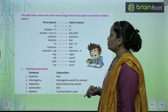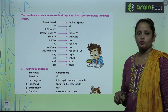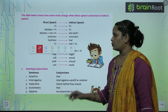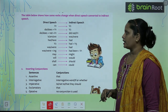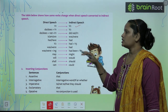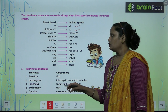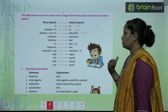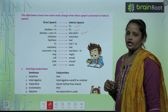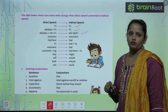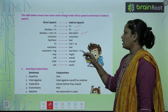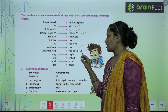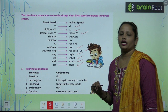The table below shows how some verbs change when direct speech is converted to indirect speech. Yahan pe ek table diya gaya hai jo bata raha hai ki kaise sentences direct speech ko hum indirect speech mein convert kar sakte hain. Verb forms change: 'was' plus verb-ing becomes 'had been' plus verb, 'may' becomes 'might,' 'will' becomes 'would,' 'shall' becomes 'should,' 'can' becomes 'could.'